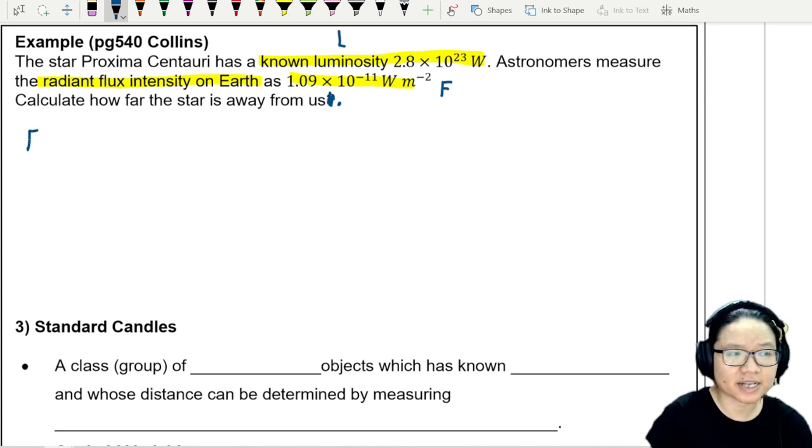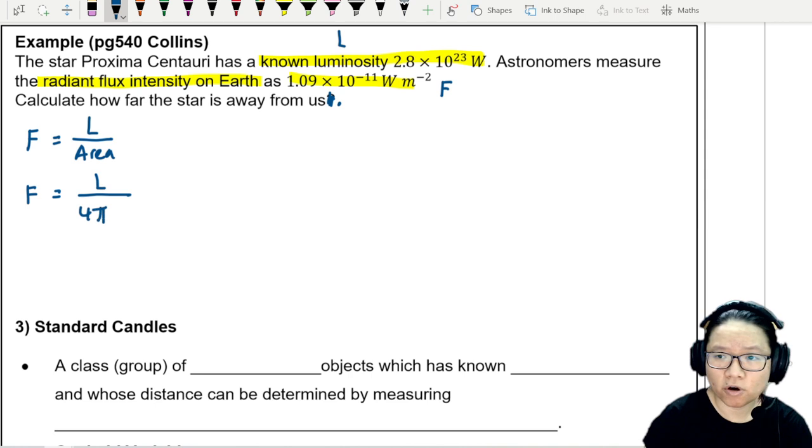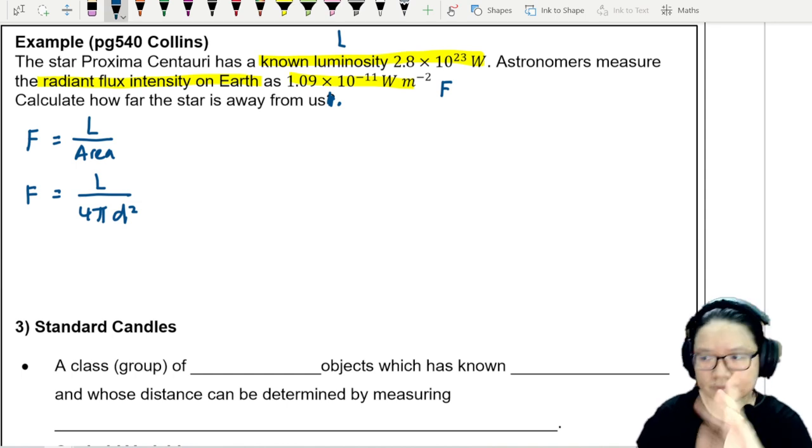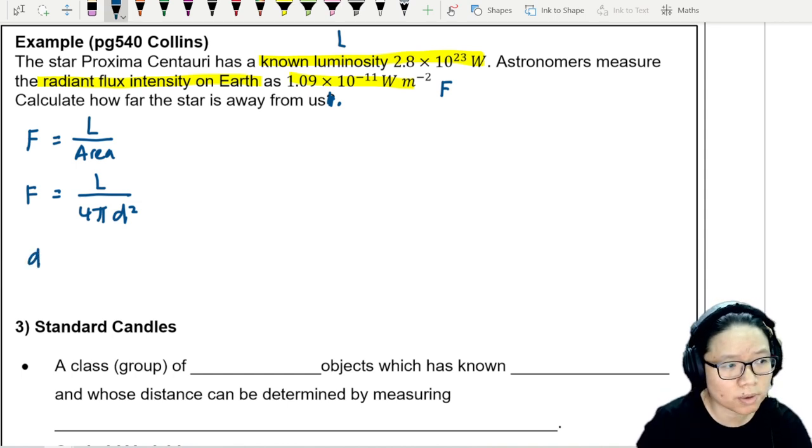So this is L and this is F. So recall that radiant flux intensity F is equal to L over area, power per unit area. And right now the area that we are using is the area of a sphere 4πD². Then we can substitute. So the radiant flux intensity given is, I guess what I'll normally do in the exam is I will swap this, because I don't want to calculate wrong stuff. So L over 4πF.